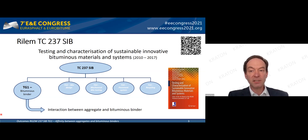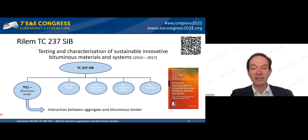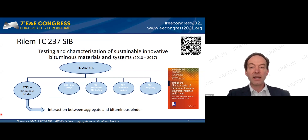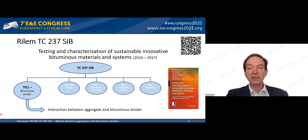TC 237 SIB was on testing and characterization of sustainable interactions between materials and systems, active from 2010 until 2017. It had five task groups, with Task Group 1 looking at the binder scale and specifically the interaction between aggregate and bituminous binder. All results were published in a state-of-the-art report accessible via the QR code shown on screen.